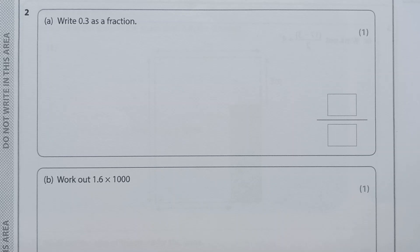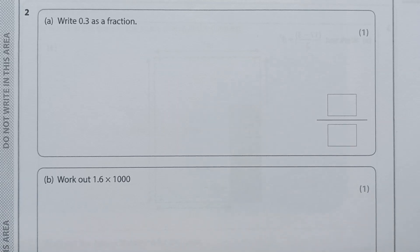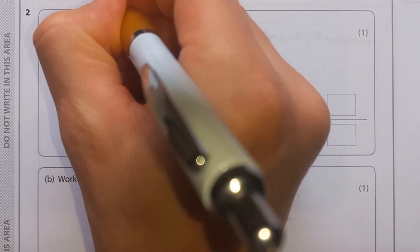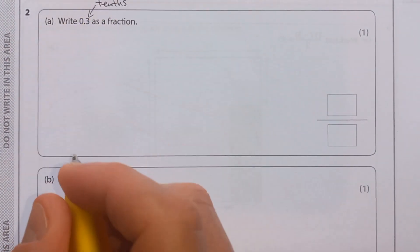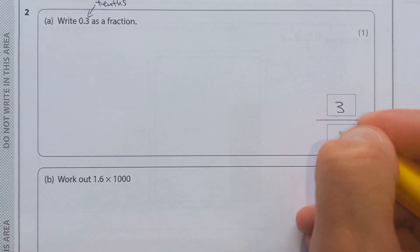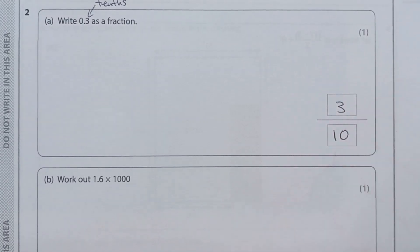Question 2. Write 0.3 as a fraction. The 3 is in the tenths column, so that means that's the same as 3 tenths, or 3 over 10.